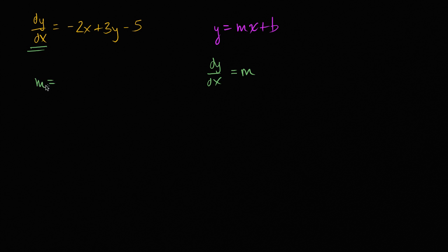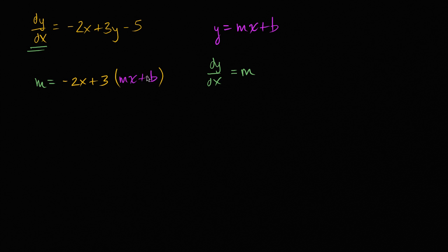So we can write m is equal to negative 2x plus 3 times y. And instead of putting y there, we write mx plus b, since y is equal to mx plus b. And as a repeated reminder, this has to be true for all x's. So we have m equals negative 2x plus 3 times (mx plus b), minus 5.